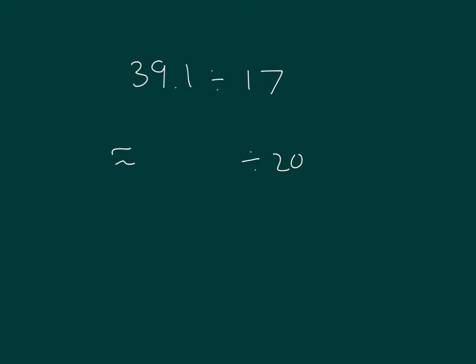We need to round our whole, 39.1, so it is close to a number that can be easily divided by 20. What can we round it to? Count by 20 is 20, 40. So we have 40 divided by 20. That's the same as 4 divided by 2, which is 2. So our estimated quotient is 2.